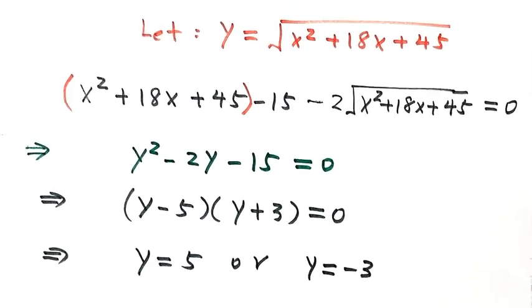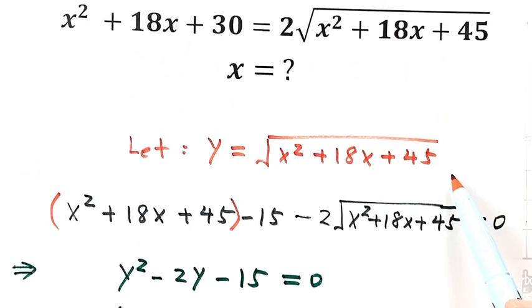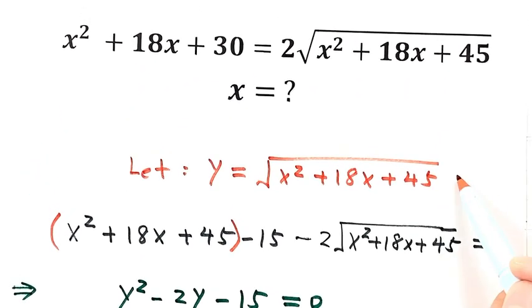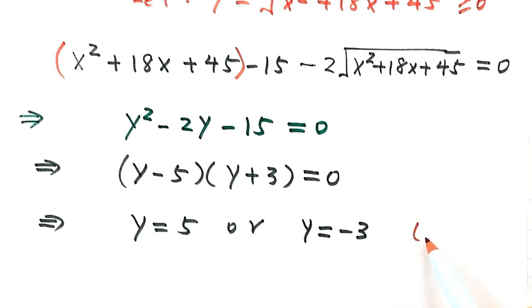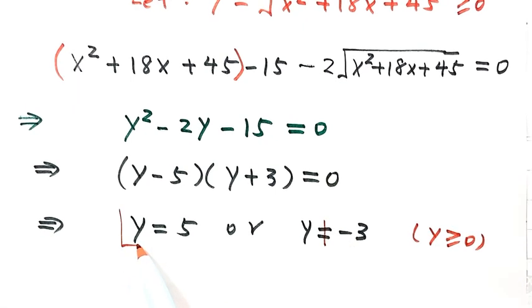Because here, y equals the square root, and square root is always greater than or equal to 0. So because y is always greater than or equal to 0, y cannot be negative 3. So that means y equals 5.